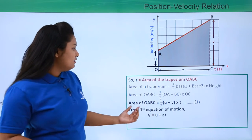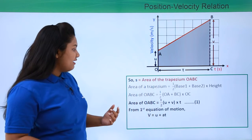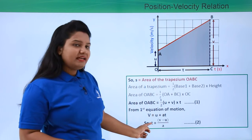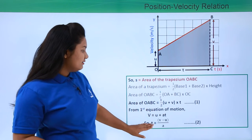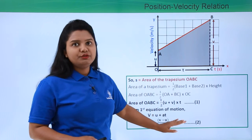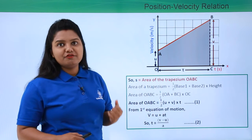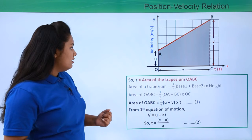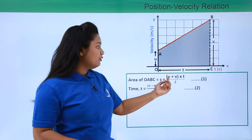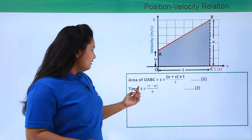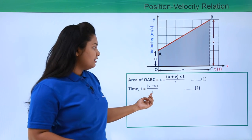From the first equation of motion, v = u + at, from which we can find the value of t as t = (v - u) / a. Let us take this as equation number two. We will be using these two equations to arrive at our third equation of motion: equation one is s = (u + v)t / 2, and equation two is t = (v - u) / a.